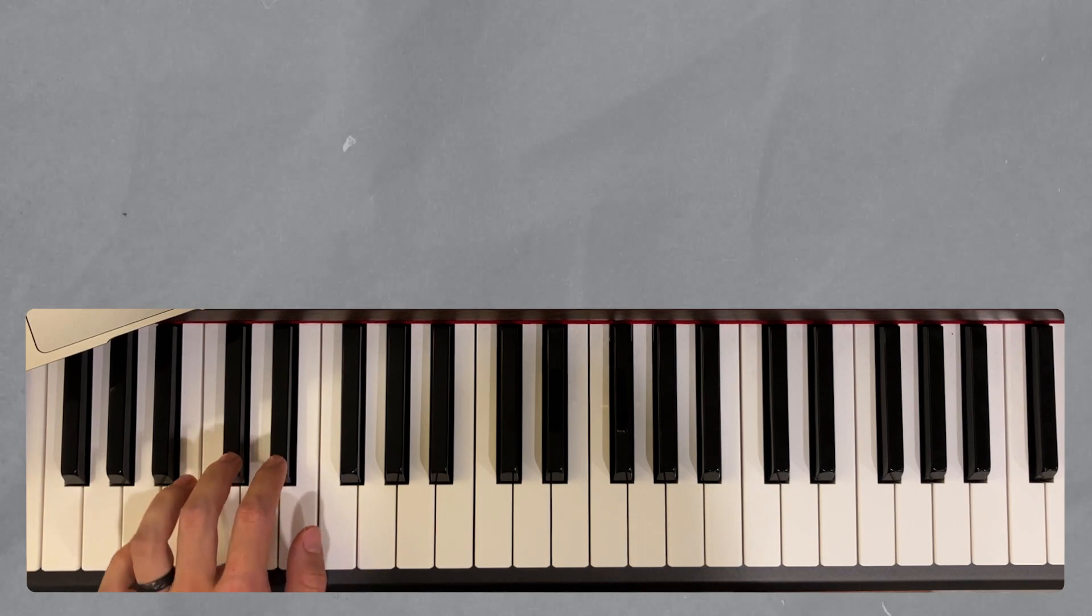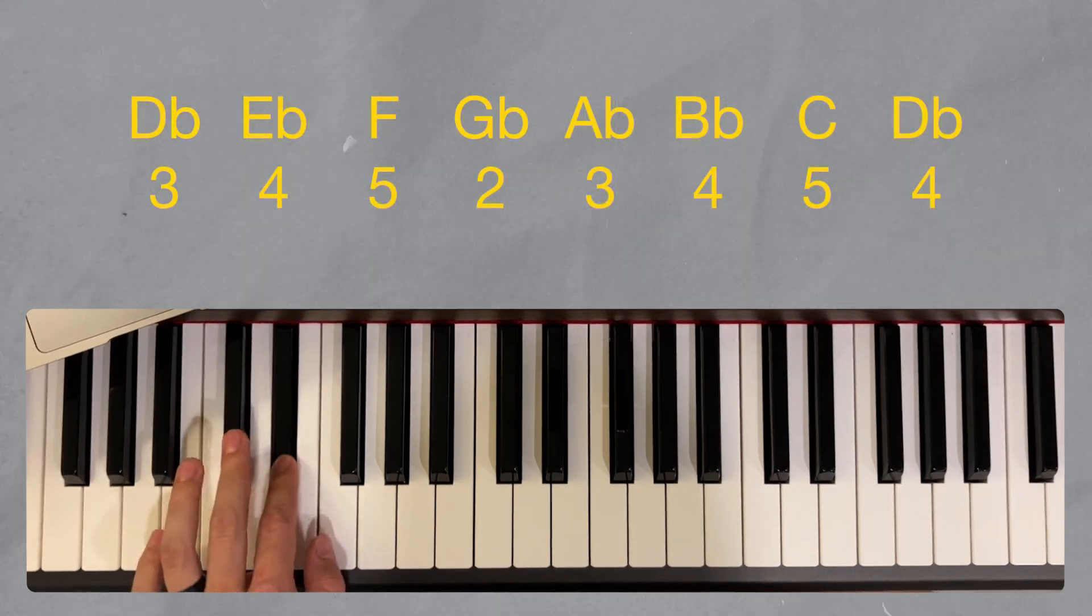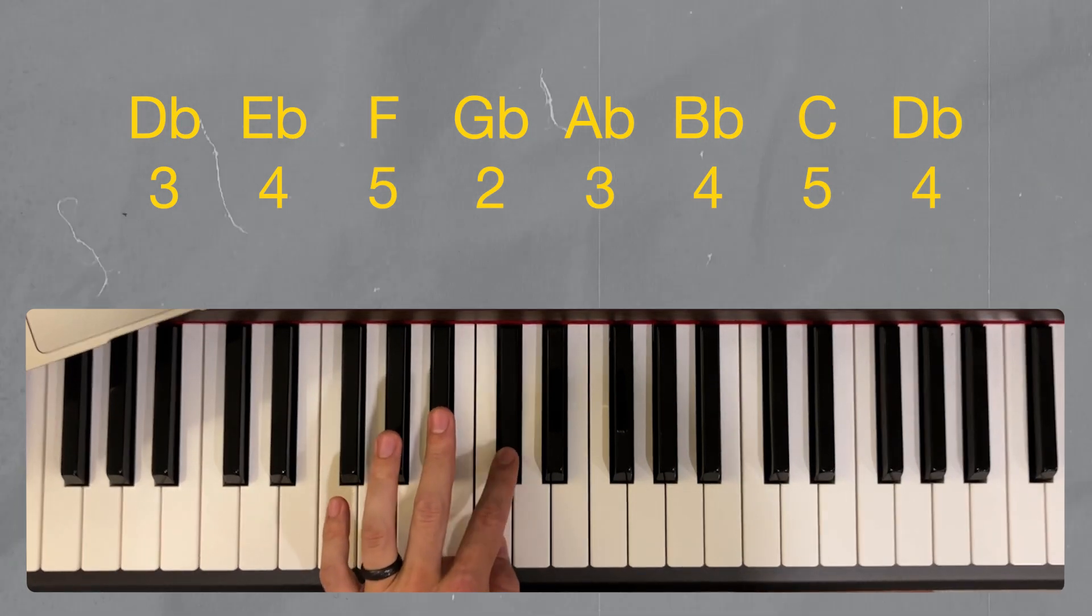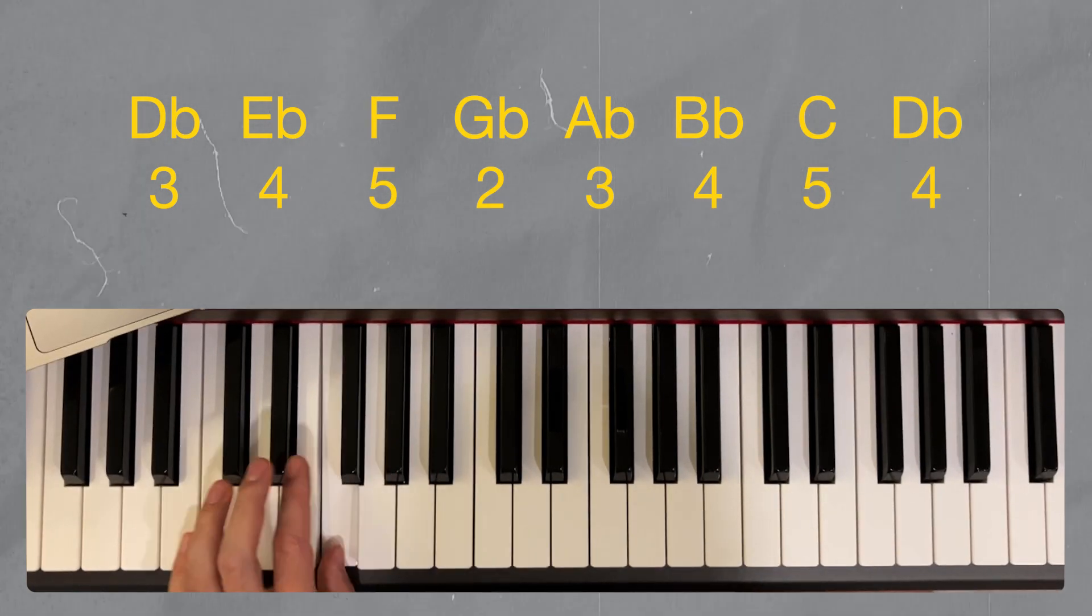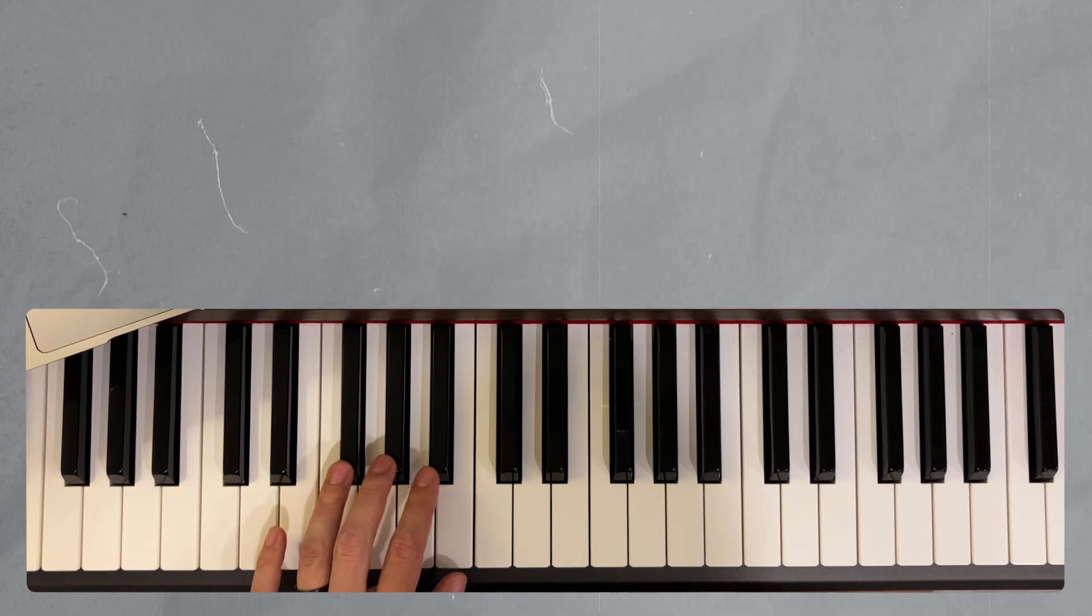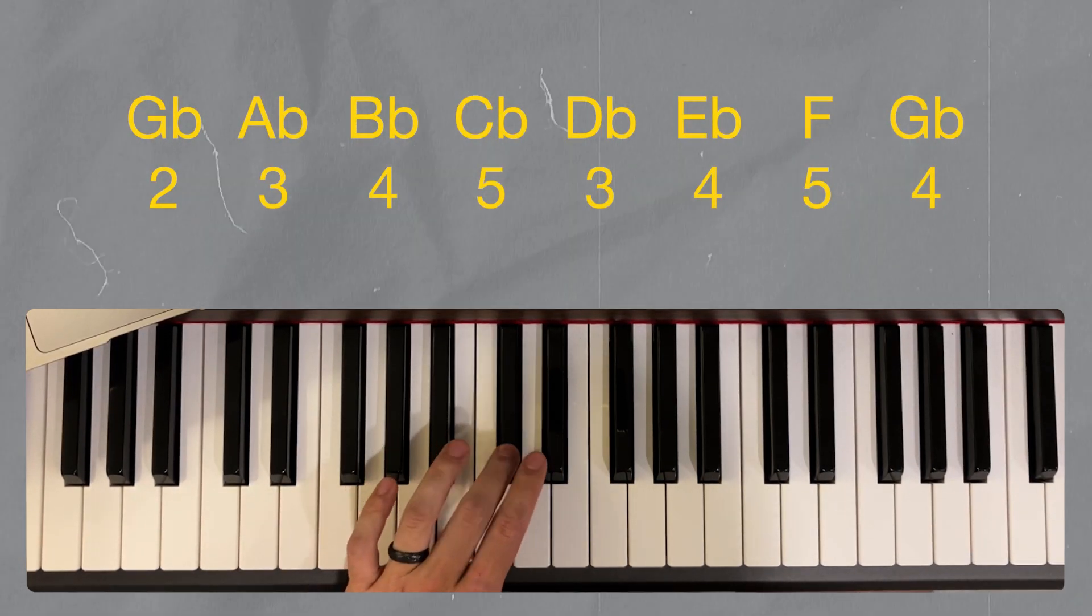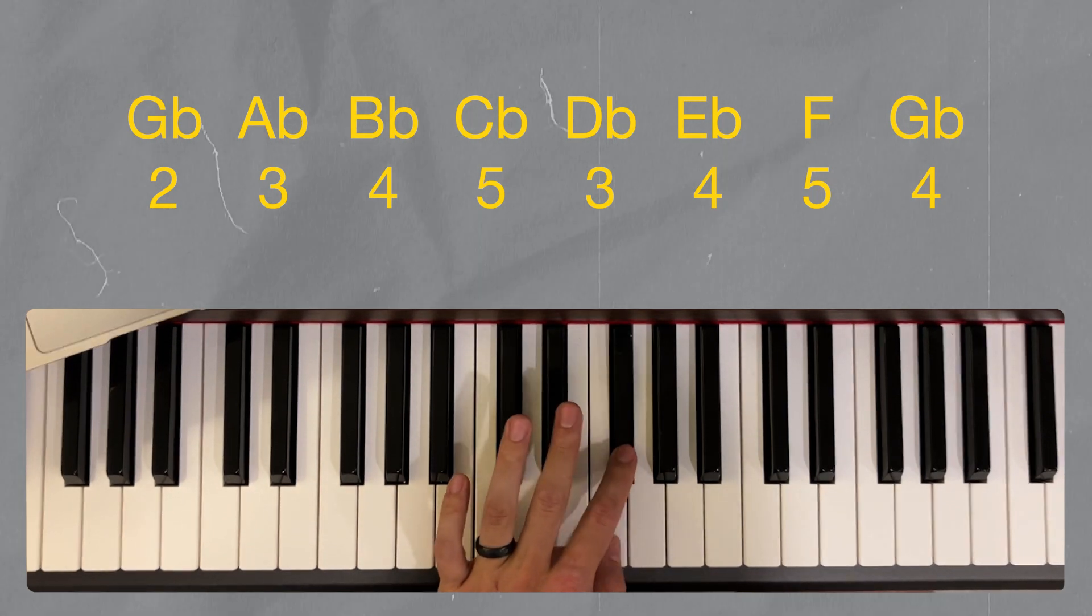D flat, 3, 4, 5, 2, 3, 4, 5. And G flat, starting on 2, 2, 3, 4, 5, 3, 4, 5.